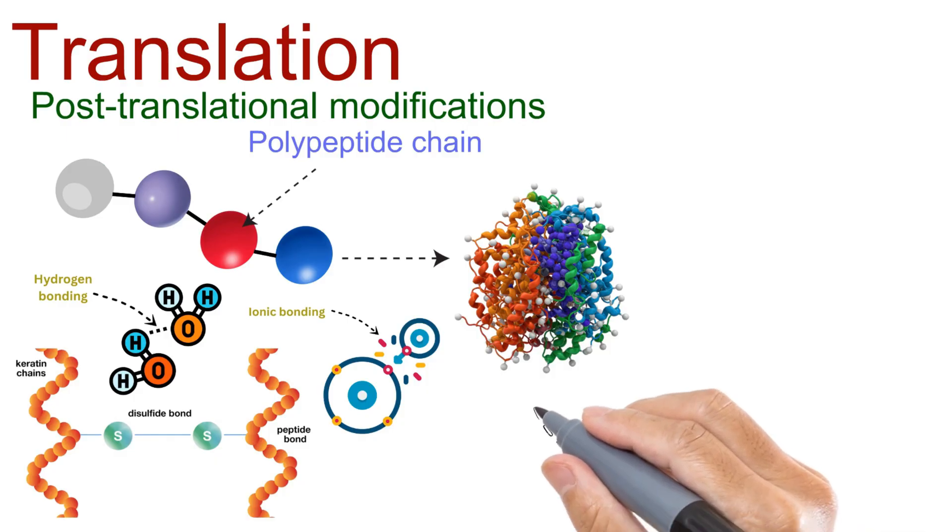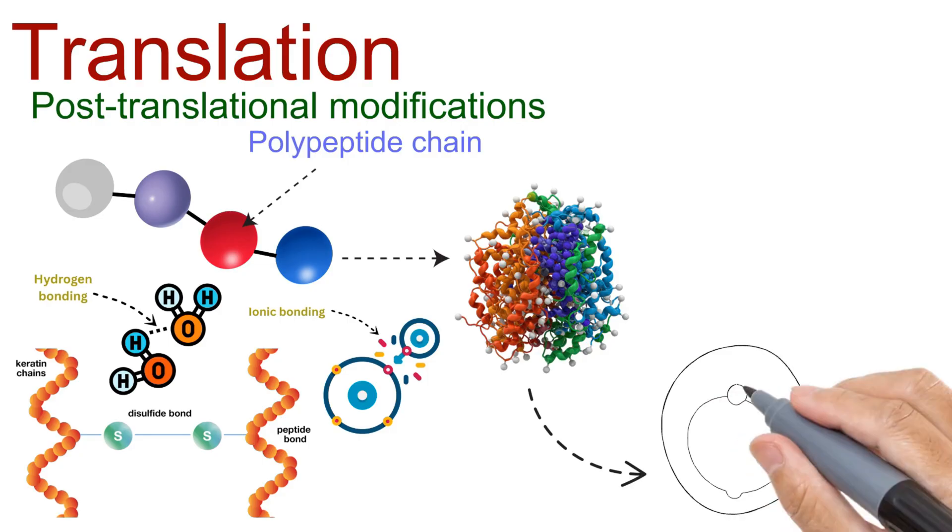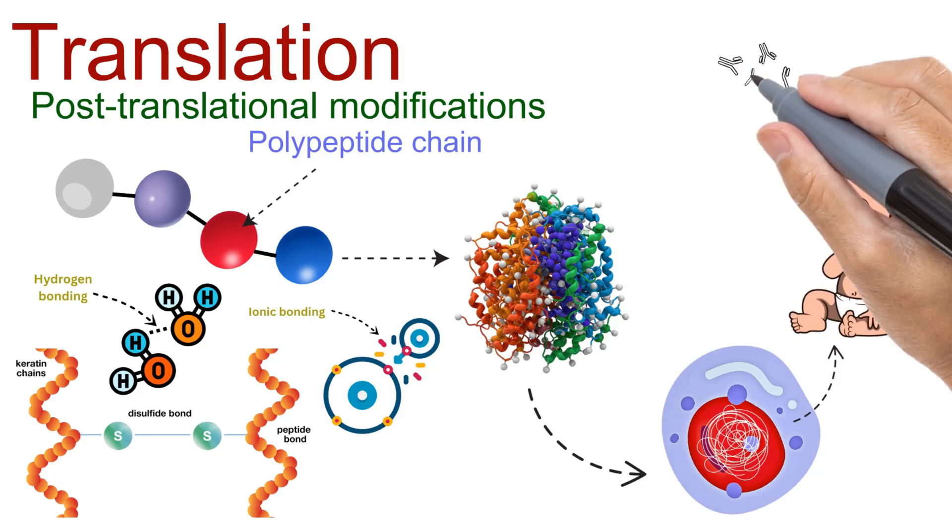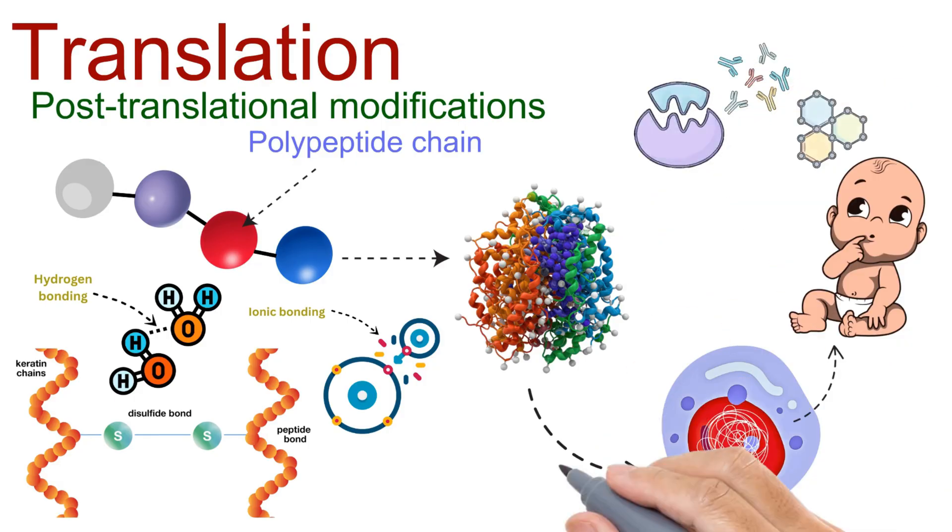Once properly folded, the protein may stay inside the cell to perform its role, or it may be transported out of the cell to work elsewhere in the body, like enzymes in digestion, antibodies in immunity, or hormones in signaling.